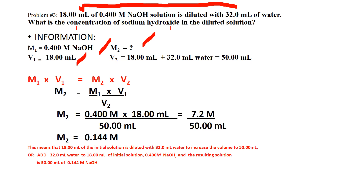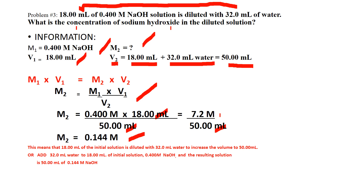The final volume V2 can be calculated because V2 equals the initial volume plus the amount of water added: 18 mL plus 32 mL equals 50 mL. Using the equation, M2 equals M1 times V1 divided by V2. Substituting and canceling milliliters: 0.4 times 18 is 7.2, divided by 50.